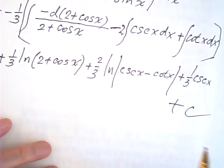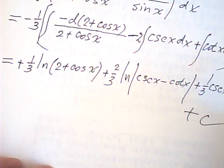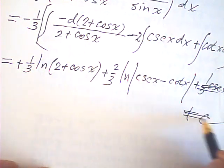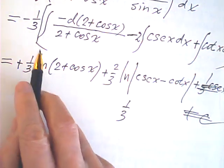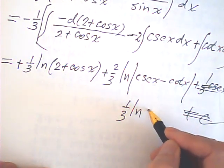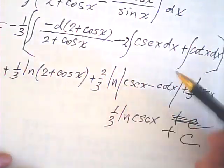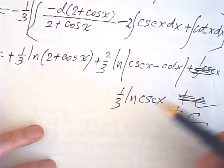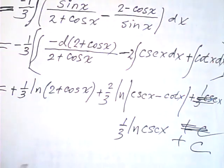Cotangent integrates as negative log cosecant. So this becomes one third cosecant x. Plus c. That's it. Cotangent integral is a negative. Negative becomes plus. Log a cosecant x plus c. That is a very, very nice method. Very nice method. Very, very good. Thank you.